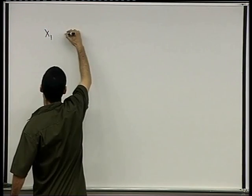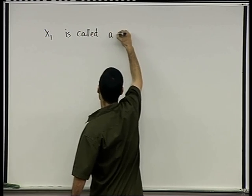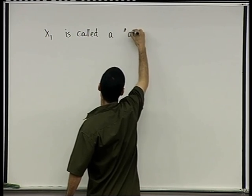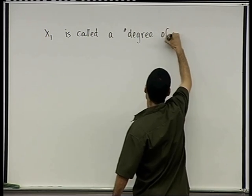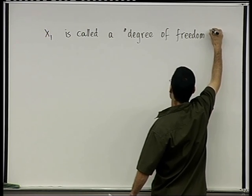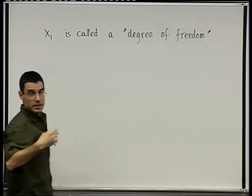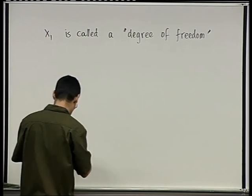x1 is called a degree of freedom, or represents a degree of freedom. In this case, there's only one - only one variable can be taken to be any arbitrary number. That's x1.